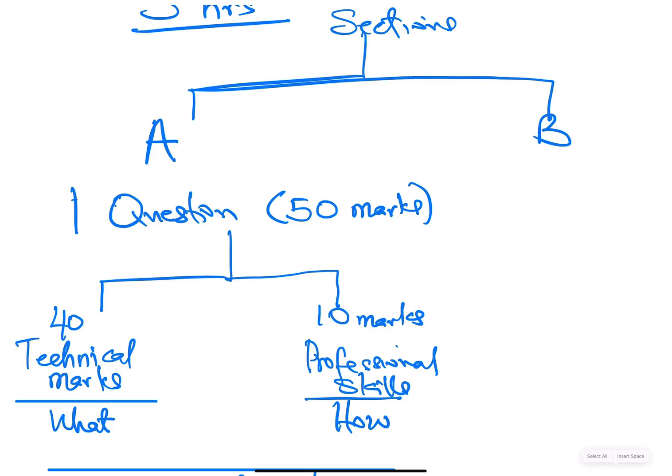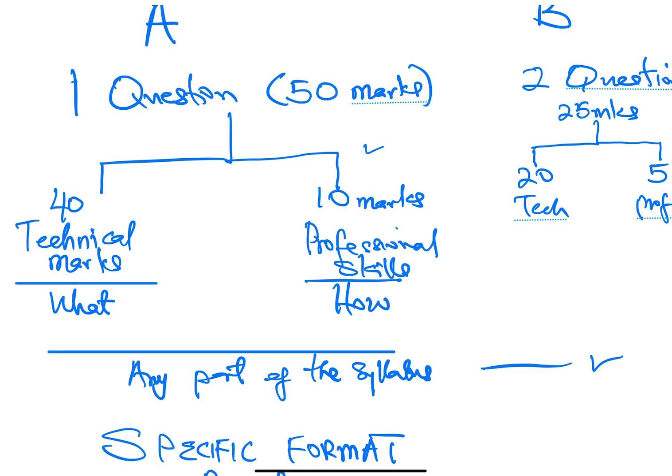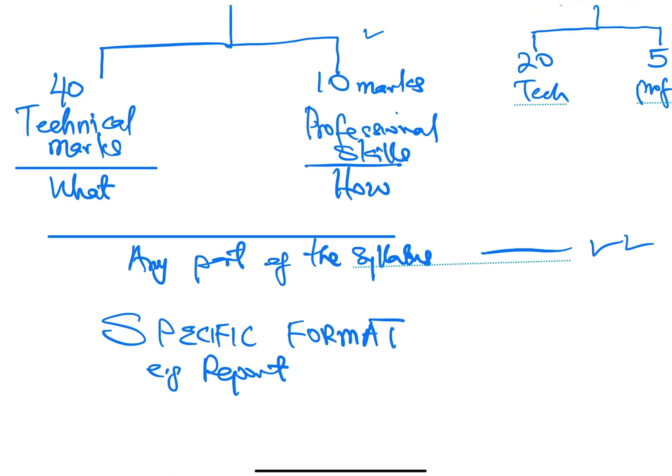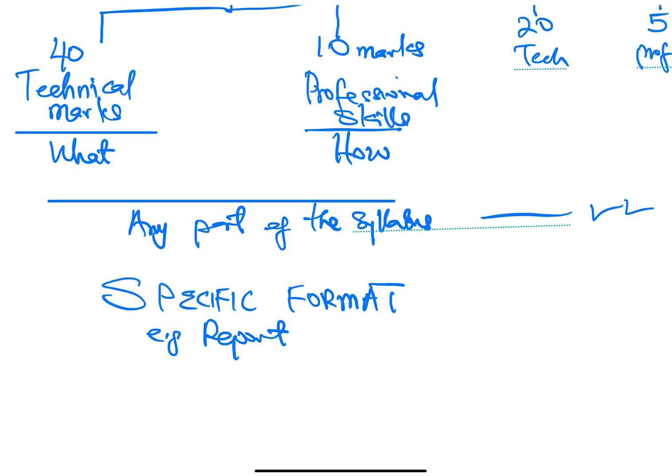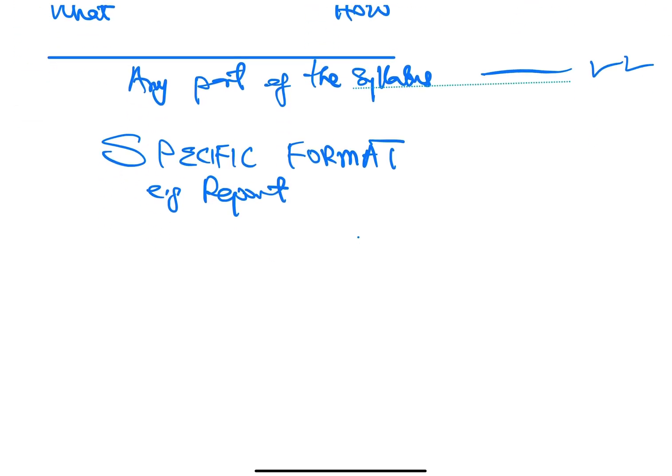Section B of the exam will be two questions. And each question will be 25 marks each. Likewise, the same way you have for Section A, Section B questions will also be divided into 20 technical marks each and 5 professional marks. So in total, what we are saying now is that this exam is actually divided into 80% of technical marks and 20% of professional marks.